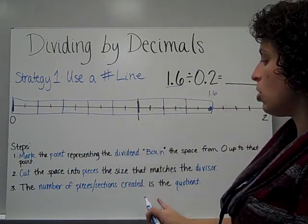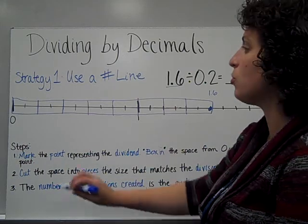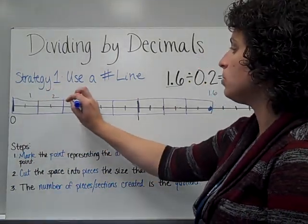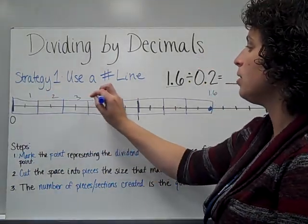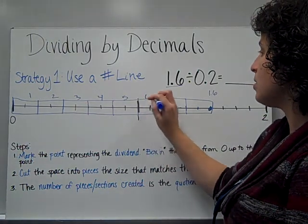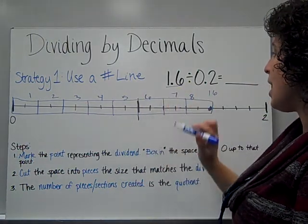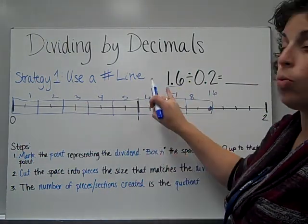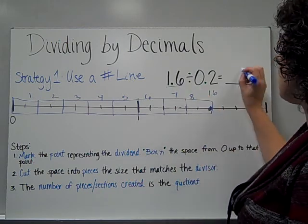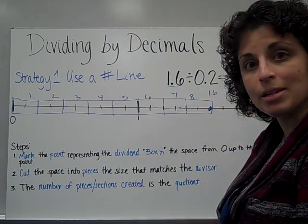My quotient is the number of pieces that I've created. I've got 1, 2, 3, 4, 5, 6, 7, 8. So 1 and 6 tenths divided by 0 and 2 tenths is 8.